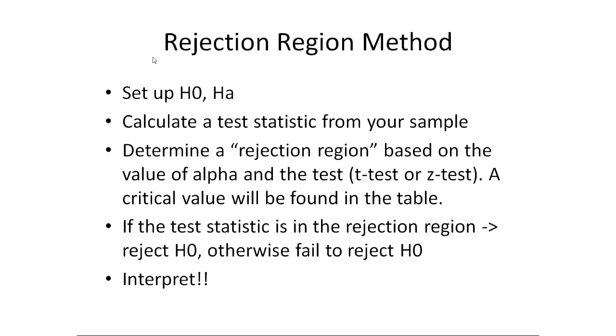From this, we're going to determine a rejection region, and that will be dependent on alpha and which test we're using. Then we're going to compare our test statistic to the region to determine what we do, and then as usual we're going to interpret it.